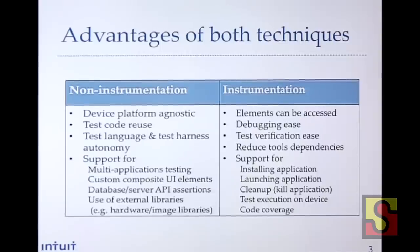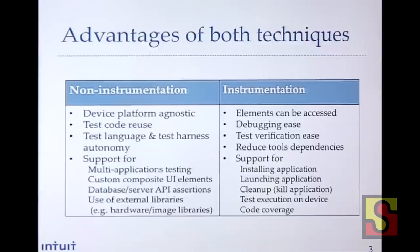A key advantage I find is that if you have a custom composite UI element — say a custom table view with radio buttons and text fields inside — with the instrumented approach you won't be able to see anything inside that composite element. Also, cases where you need to call different libraries such as image API libraries, device hardware libraries, or Bluetooth libraries — different APIs you need to validate before you can continue with your testing — these are scenarios you can't test with an instrumentation approach. There are real advantages to the non-instrumentation approach.